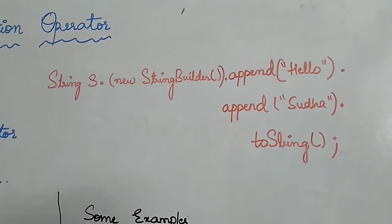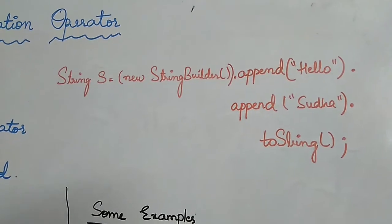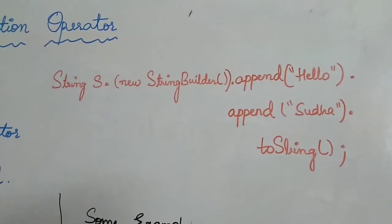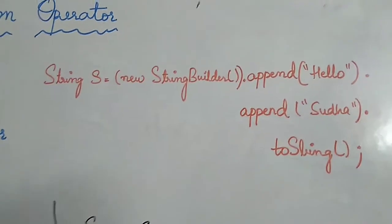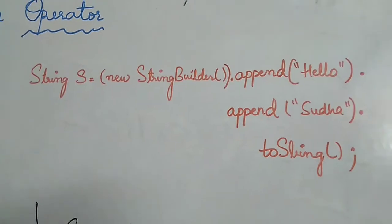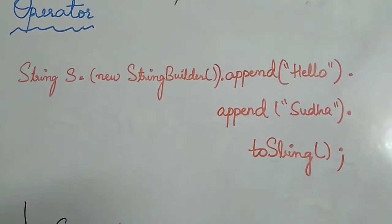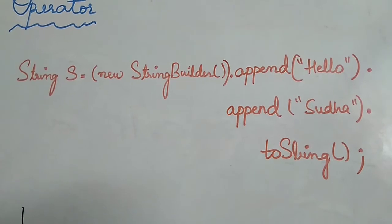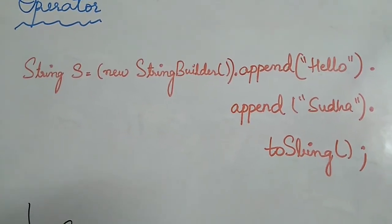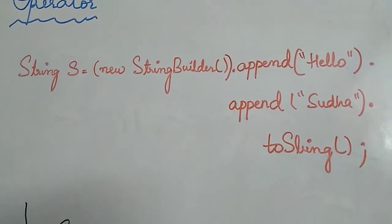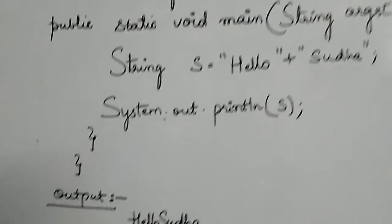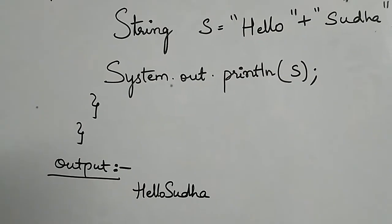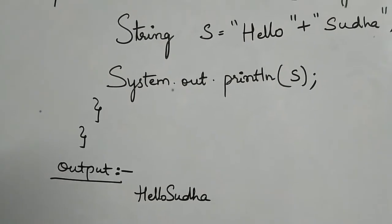String concatenation is implemented by StringBuilder class. We create an object of StringBuilder and use the append method. The append method takes the first string hello and then appends the second string to it. Finally, toString method is used to convert all this into string object, which is printed on screen when used in System.out.println.